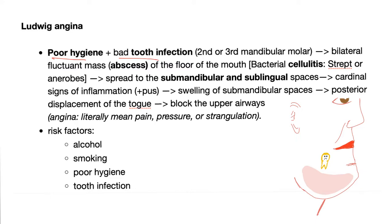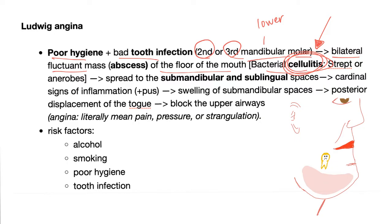So, Ludwig Angina. First, the triggers: poor hygiene and bad tooth infection. Which tooth? Second or third mandibular molar — mandibular meaning the lower jaw, not the upper — leading to a bilateral fluctuant mass of the floor of the mouth. Now, it's a bacterial cellulitis. When your exam asks what Ludwig Angina is pathologically, it's a bacterial cellulitis. Could be caused by streptococci or anaerobes, leading to spread of the submandibular and sublingual spaces.